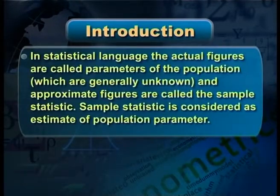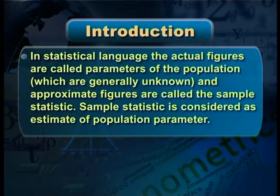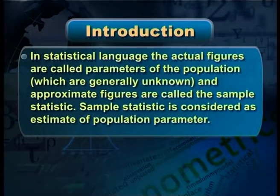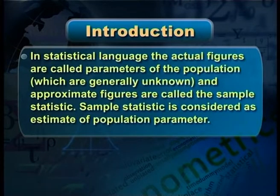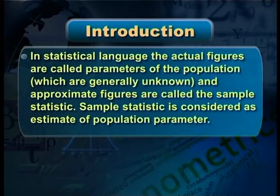In statistical language, the actual figures are called parameters of the population, which are generally unknown. And approximate figures are called the sample statistic. Sample statistic is considered as an estimate of population parameter.